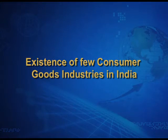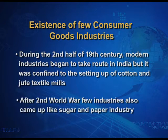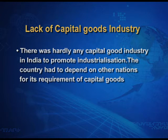During the second half of the 19th century, modern industries began to take root in India, but it was confined only to the setting up of cotton and jute textile mills. After the Second World War, a few industries came up like sugar and paper industry. There was also a lack of capital goods industries — capital goods are those goods which help in the further process of production. Since there were hardly any capital goods industries in India, the country had to depend on other nations for the requirements of capital goods.